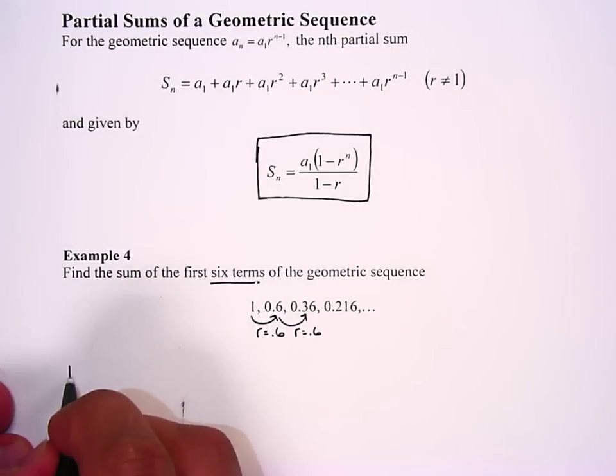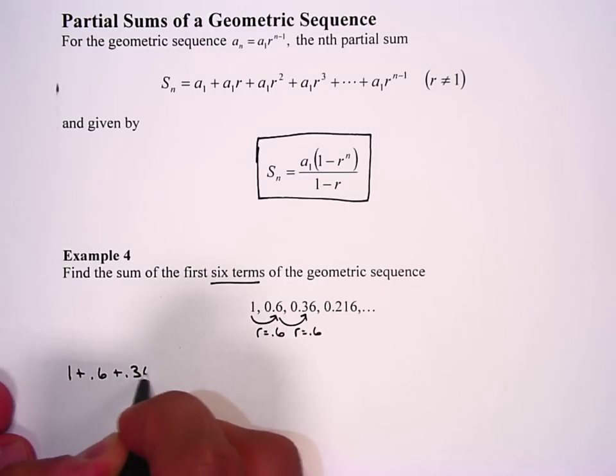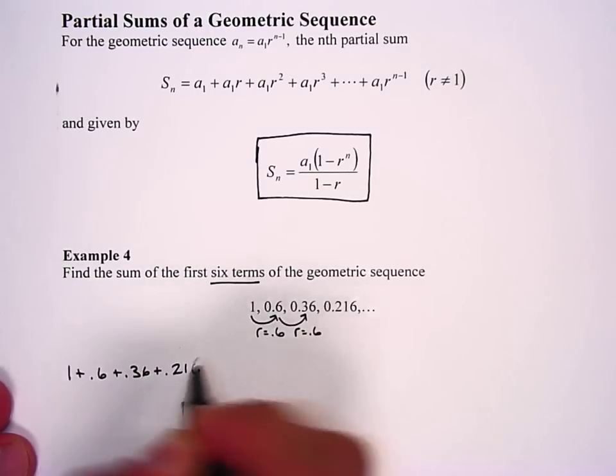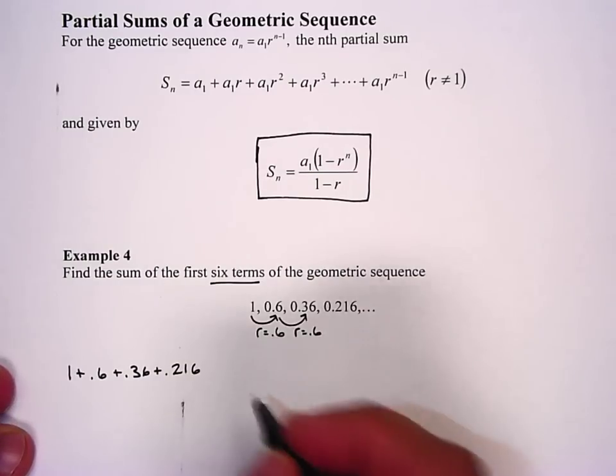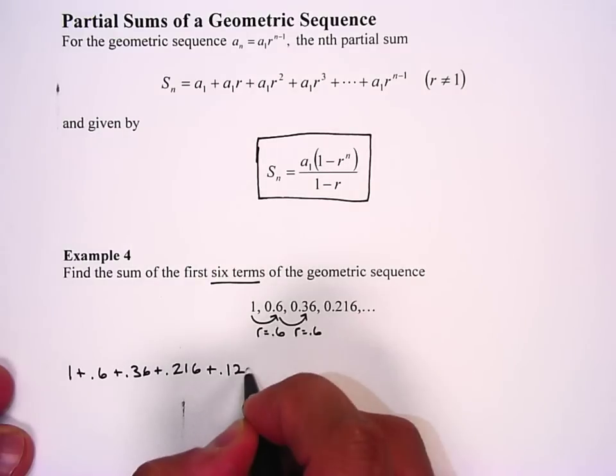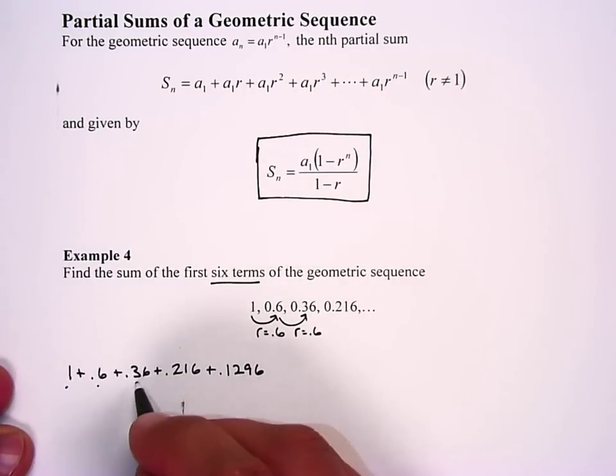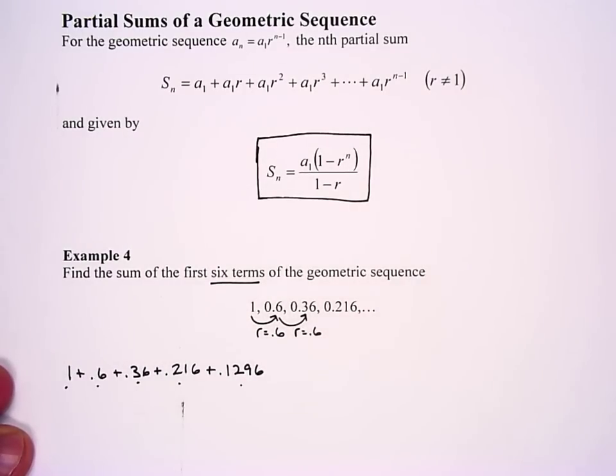Why don't I just add 1 + 0.6 + 0.36 + 0.216? There's four terms. If I turn on my calculator and do 0.216 times 0.6 I get + 0.1296, that's five terms, times 0.6 + 0.07776.